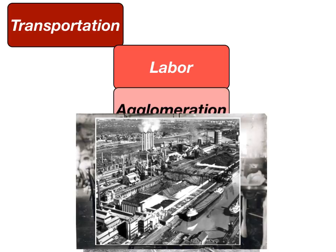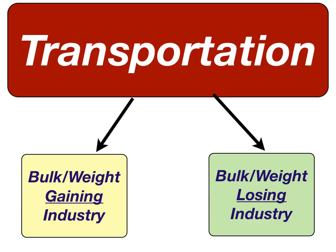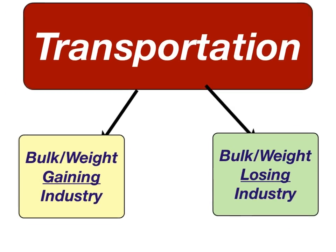Furthermore, we're going to dive deeper into one of the three factors: transportation. According to Weber, there were two major types of industries where transportation played a major factor — bulk or weight gaining industries, and bulk or weight losing industries.